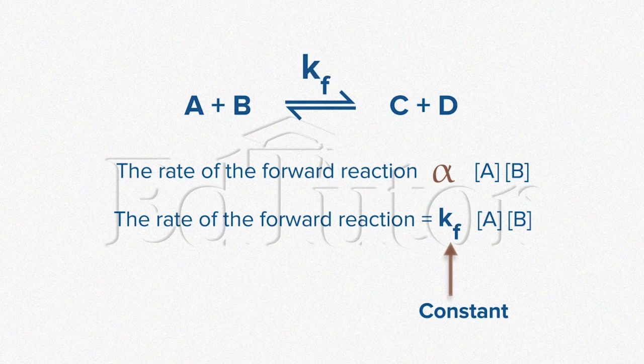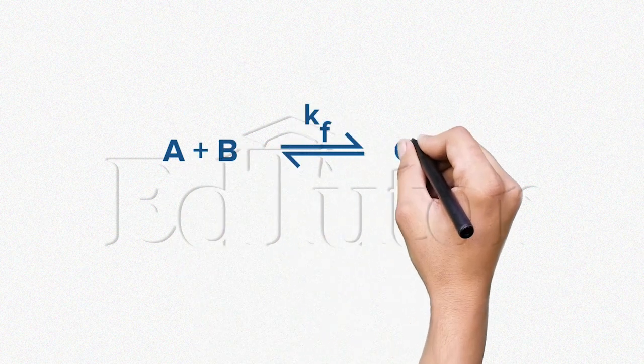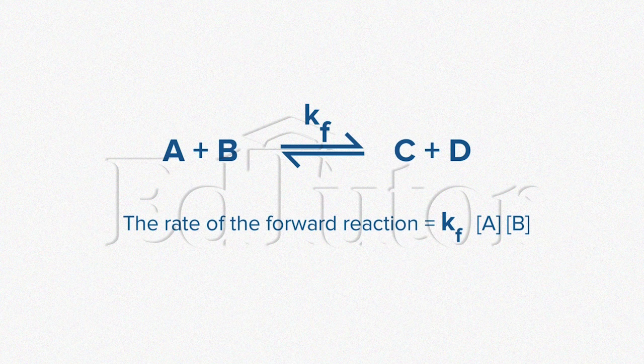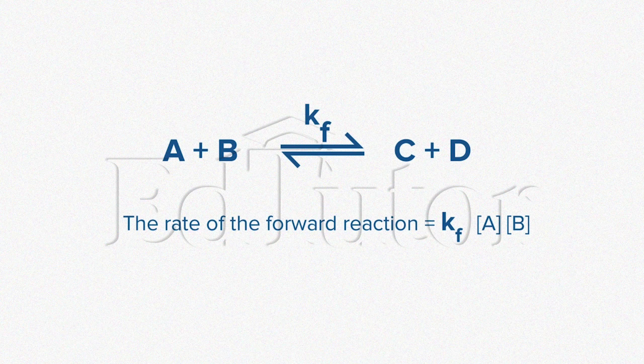KF represents the constant for the forward reaction. Altogether, the equation states that the rate of forward reaction is equal to the specific rate constant multiplied by the concentrations of A and B. That is how the forward reaction is expressed.